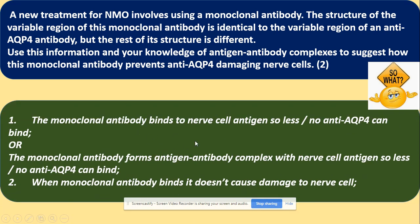We're looking at the structure because the question is asking you to use the information — identical and different — and your knowledge about the complexes. So the easy mark here: the monoclonal antibody will bind to this nerve cell antigen, so less of the anti-AQP4 can bind, because the variable regions are identical. Or you could say the monoclonal antibody will form an antigen-antibody complex with the nerve cell antigen, so less anti-AQP4 can bind. And when the monoclonal antibody binds, it doesn't cause the damage — so it prevents the damage, which comes from the question.